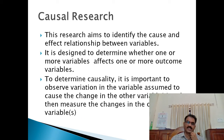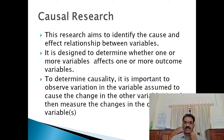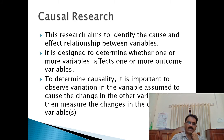The next type is causal research. Causal research aims to identify the cause-and-effect relationship between variables. It is designed to determine whether one or more variables affect one or more outcome variables. To determine causality, it is important to observe variation in the variable assumed to cause the change in the other variable, and then measure the changes in those other variables.